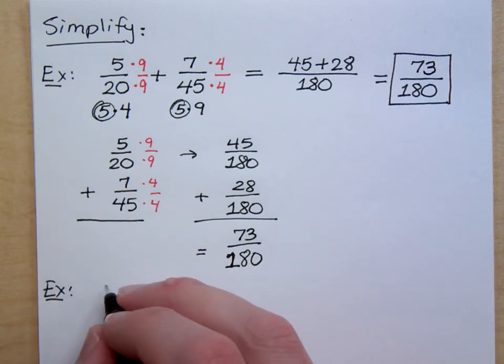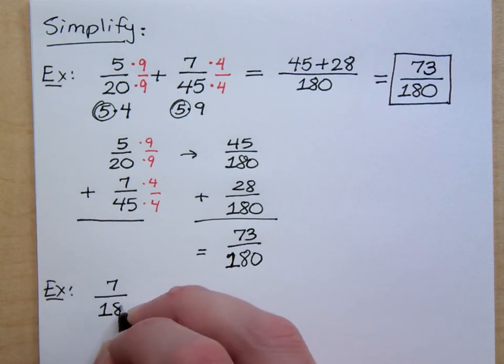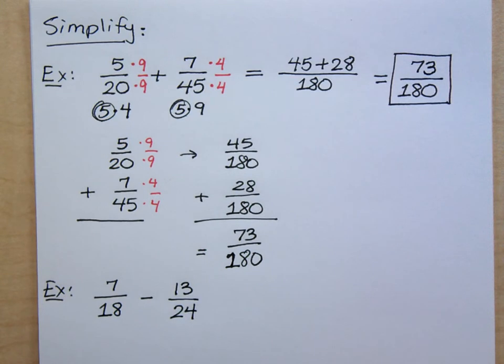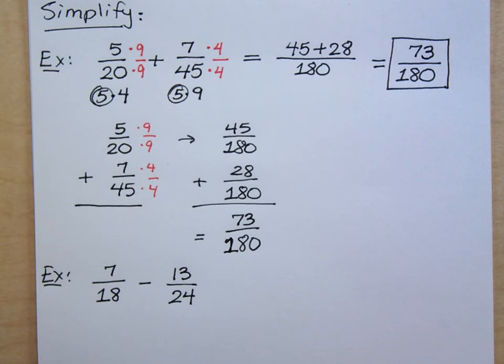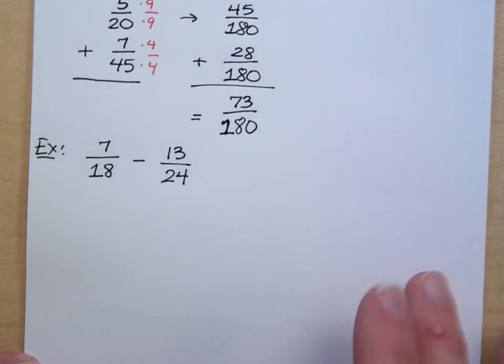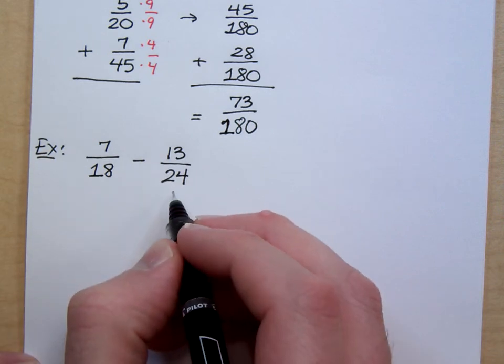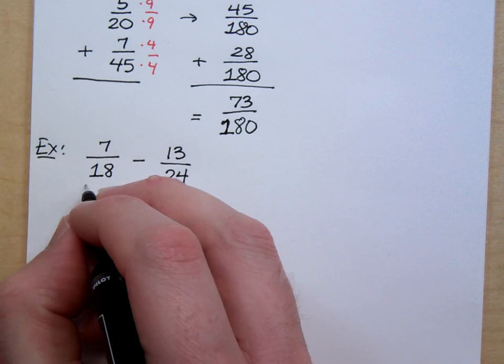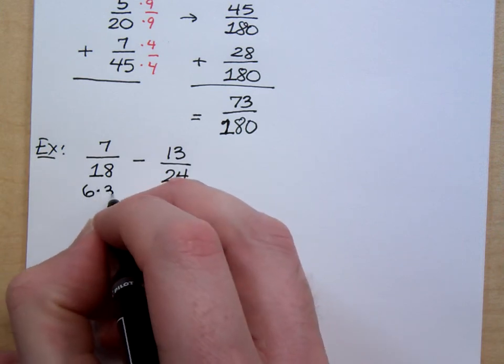Okay, let's try this. 7 over 18 minus 13 over 24. Remember, if you're adding and subtracting, you have to have common denominators, and that's the only time we have to have common denominators, when we're adding and subtracting. So, some of you may be able to look at 18 and 24 and come up with the LCD. Others, it may take a little bit more work. But, if you remember what I just showed you above, factor these guys and see what the common factor is.